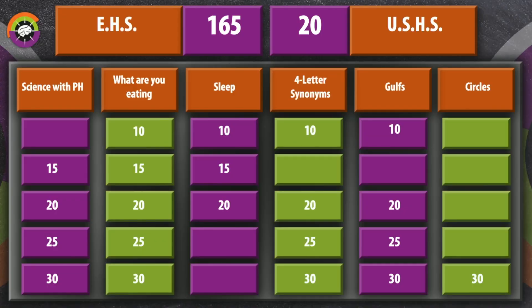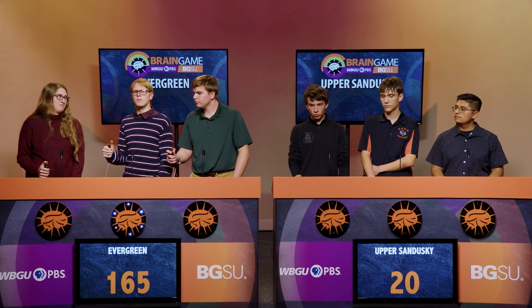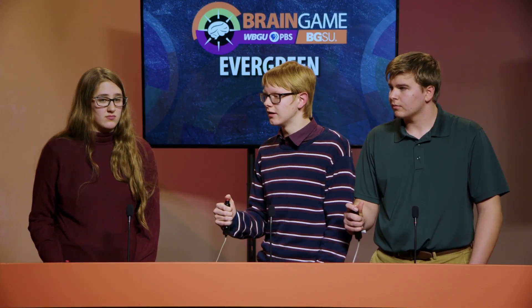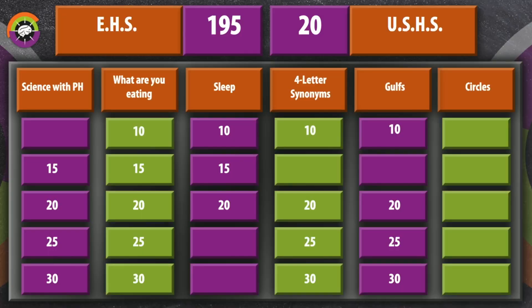Evergreen selects Circles for 30 points. What do we call the arc bounded by two radii of a circle? Evergreen buzzes in — Caleb answers 'sector,' which is correct. Evergreen in control.